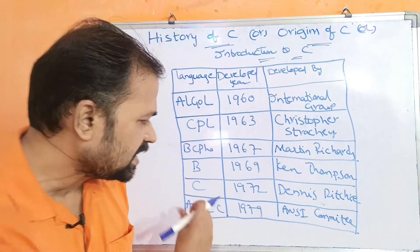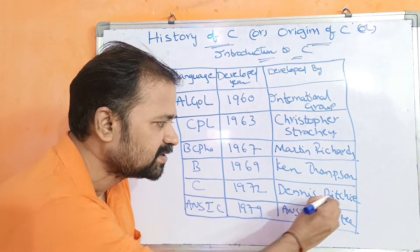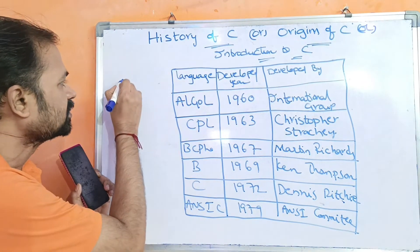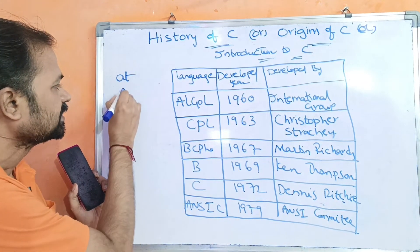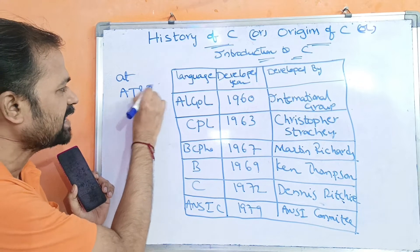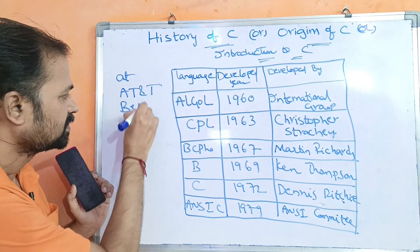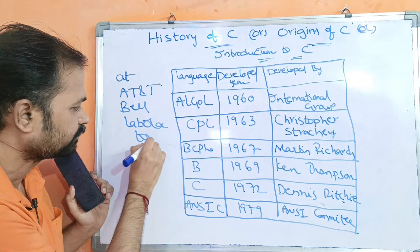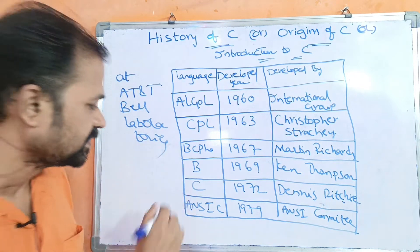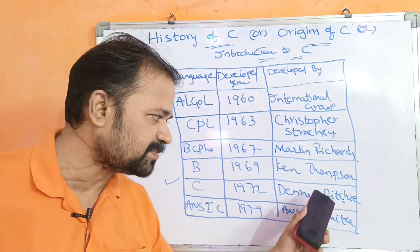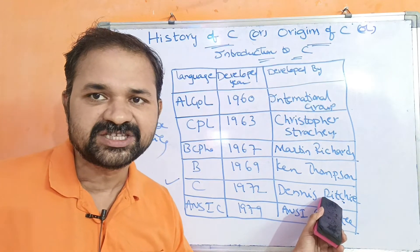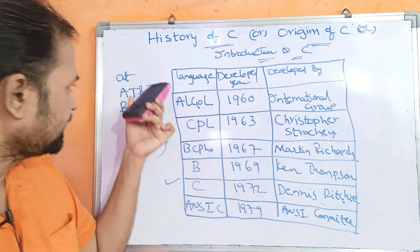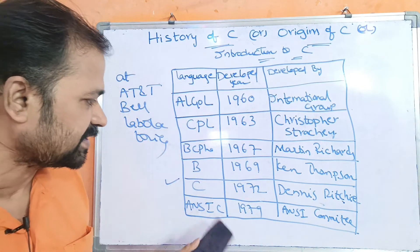C language was developed by Dennis Ritchie in 1972 at AT&T Bell Laboratories.